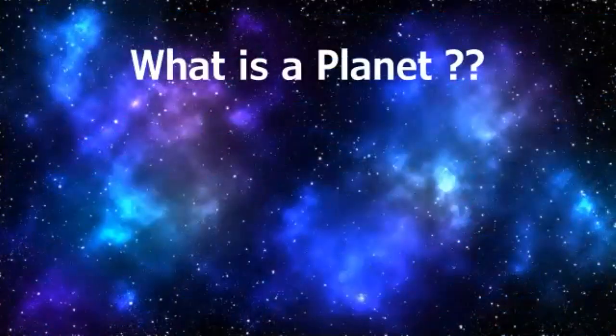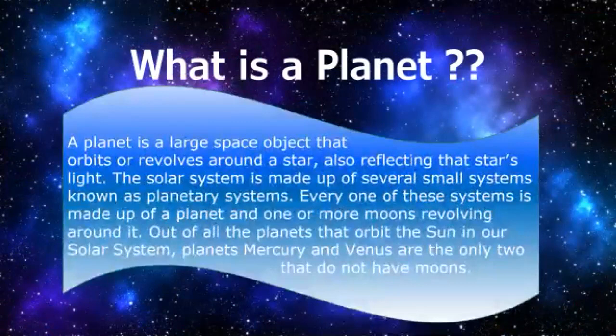What is a planet? A planet is a large space object that orbits or revolves around a star, also reflecting that star's light. The solar system is made up of several small systems known as planetary systems. Every one of these systems is made up of a planet and one or more moons revolving around it. Out of all the planets that orbit the sun in our solar system, Mercury and Venus are the only two that do not have moons. All the rest have their own moons.